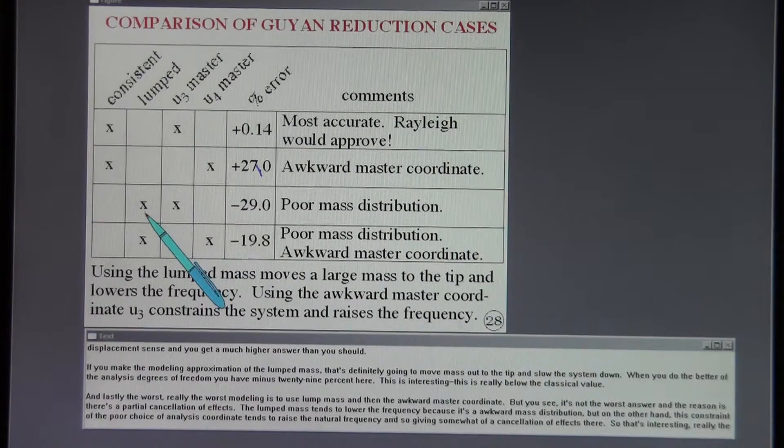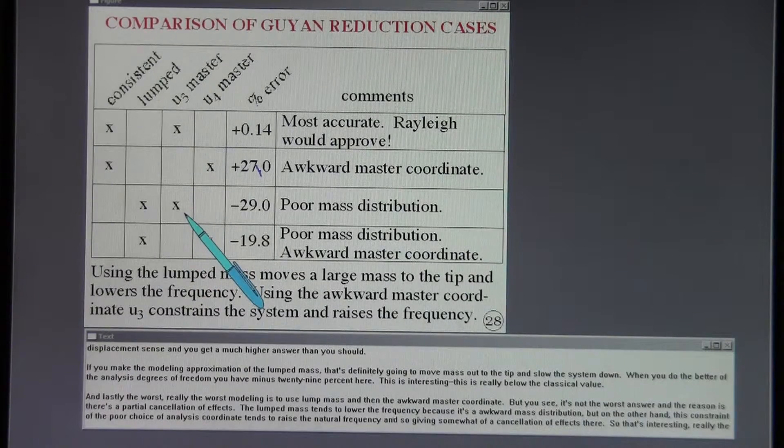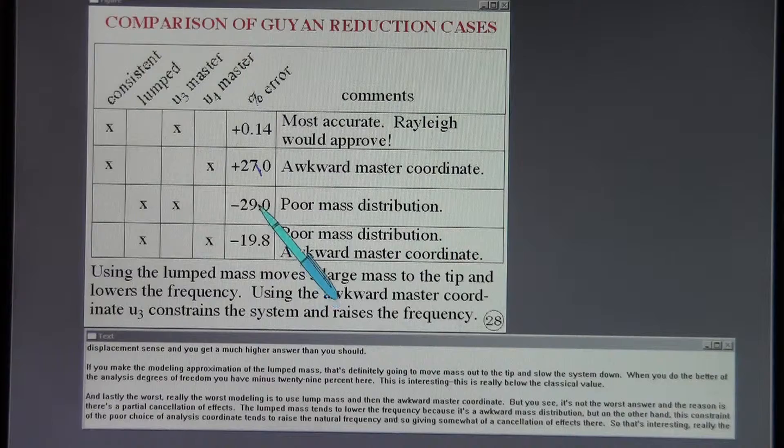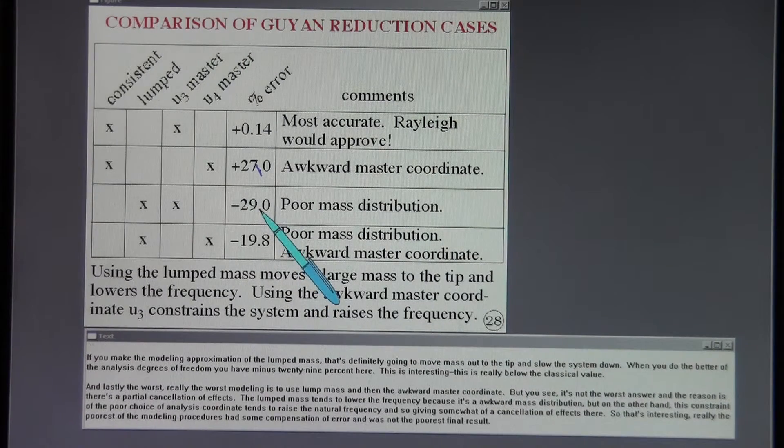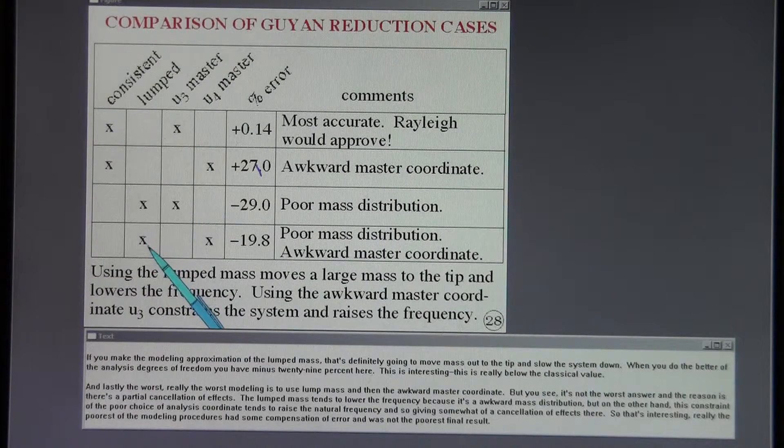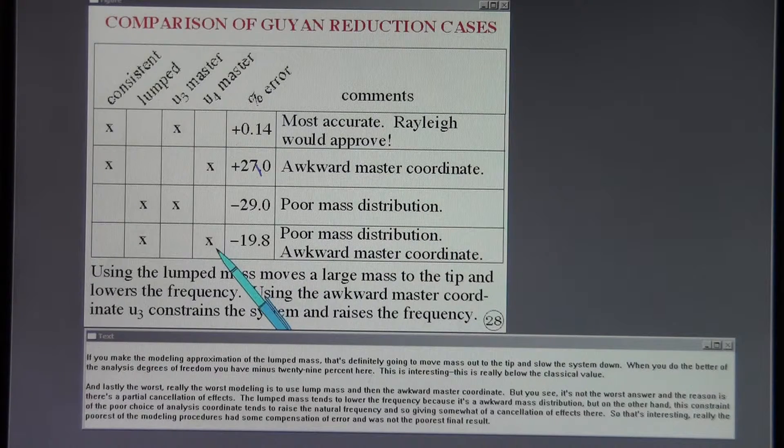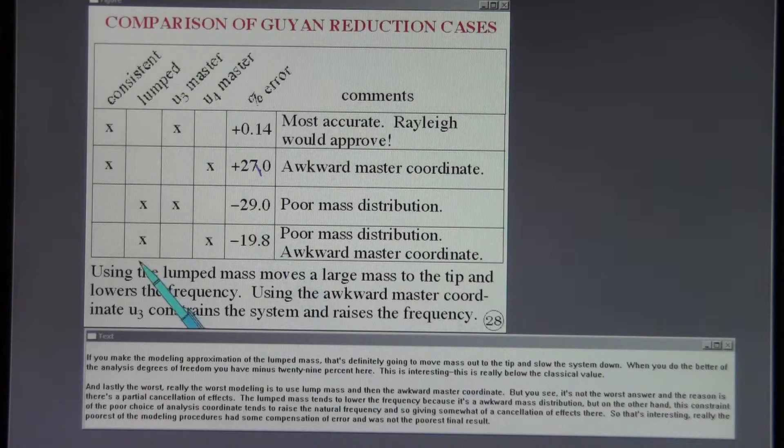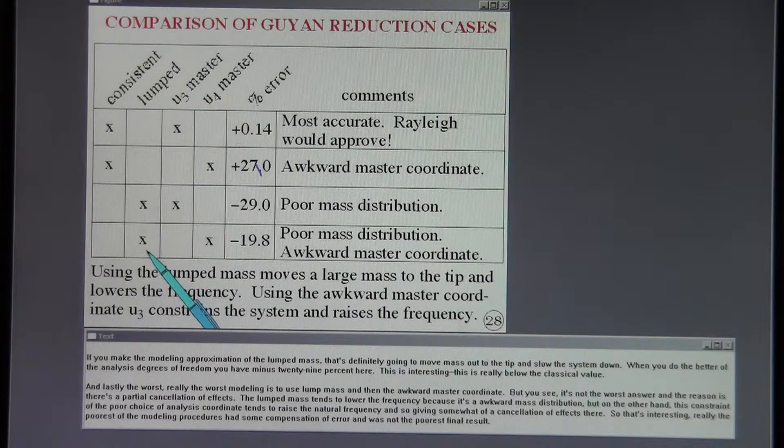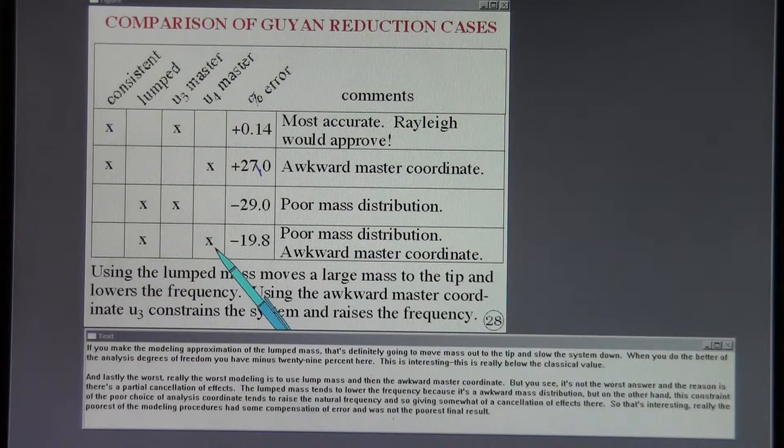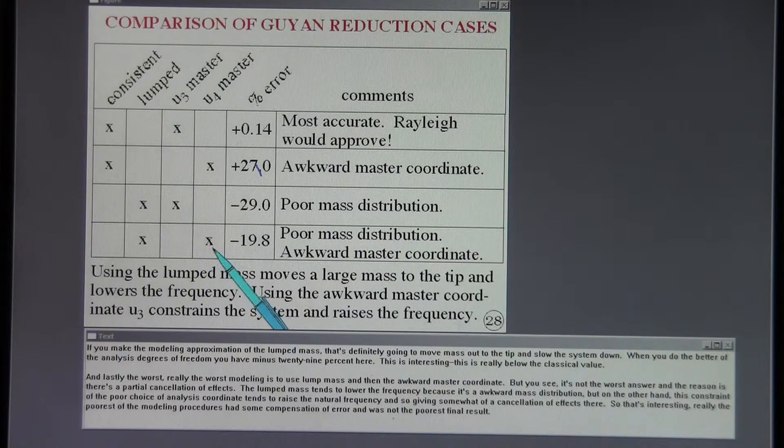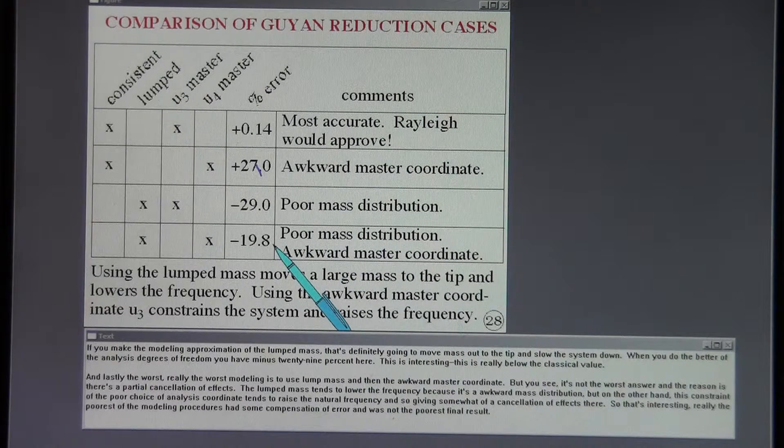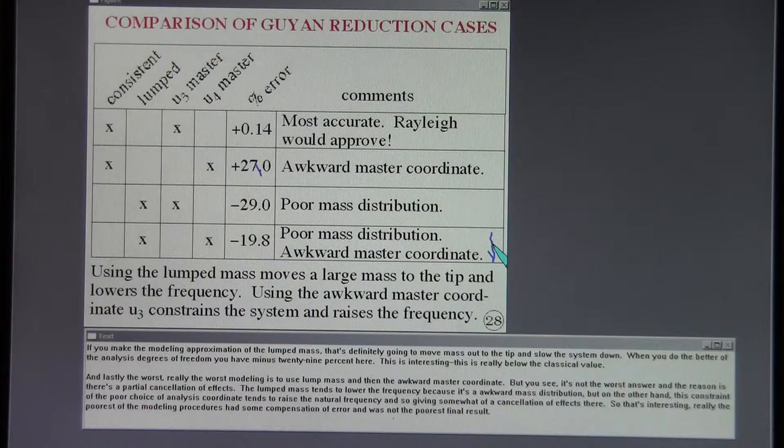When you do the better of the analysis degrees of freedom you have minus 29% here. This is interesting, this is really below the classical value. And lastly the worst, really the worst modeling of all is to use lumped mass and then the awkward master coordinate. But you see it's not the worst answer. And the reason is there's a partial cancellation of effects. The lumped mass tends to lower the frequency because it's an awkward mass distribution. But on the other hand this constraint of the poor choice of analysis coordinate tends to raise the natural frequency. And so giving somewhat of a cancellation of effects there. So that's interesting really the poorest of the modeling procedures had some compensation of error and was not the poorest final result.